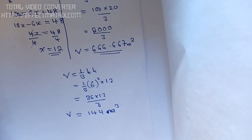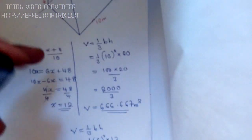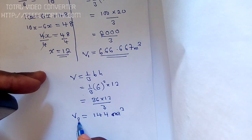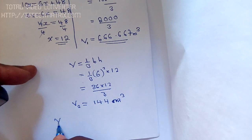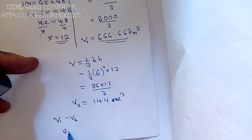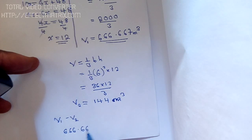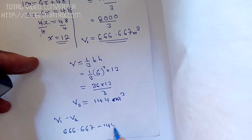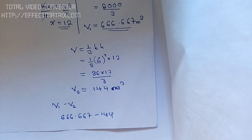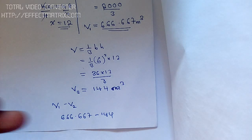Now we have both volumes. Volume of the frustum = Volume 1 − Volume 2 = 666.67 − 144 = approximately 522.67 cubic meters. That is the volume of the frustum pyramid.